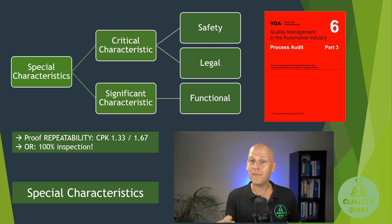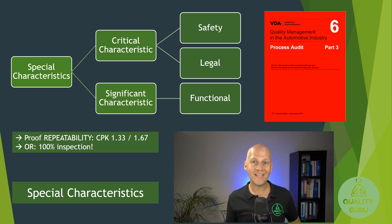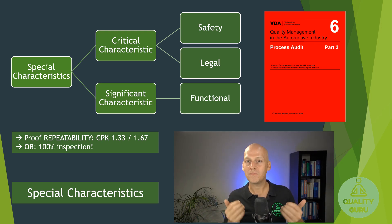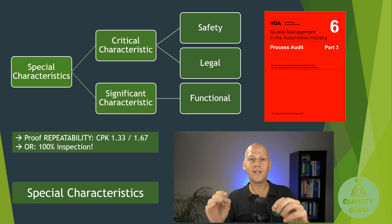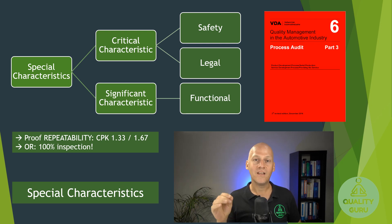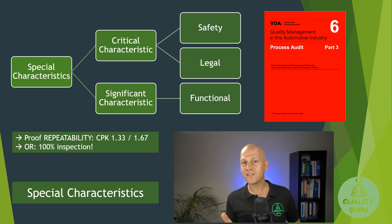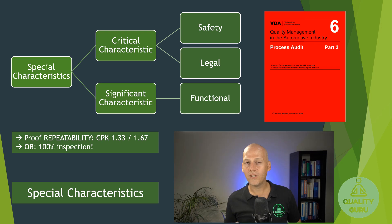On the other hand, you have legal consequences: if a product fails, it could lead to the car no longer meeting legal requirements, meaning the car must be pulled from the market — a recall, which is bad for the supplier and the brand. That's why safety and legal are placed at very high severity: nine and ten on an FMEA severity scale. Significant characteristics cover everything up to eight and could be, for example, a radio not playing music or an air conditioning not working.